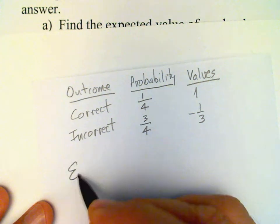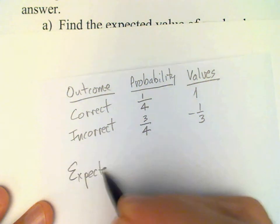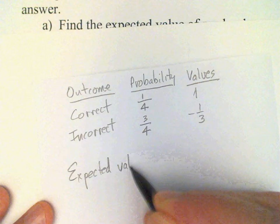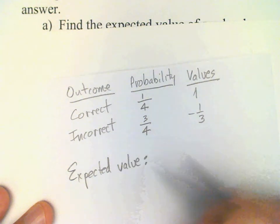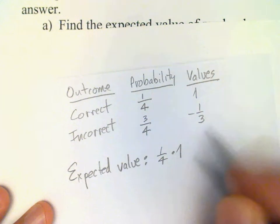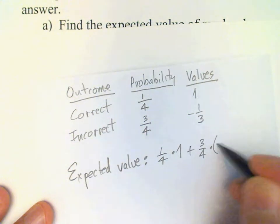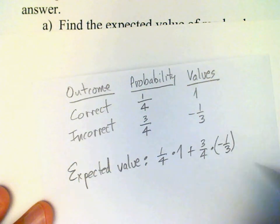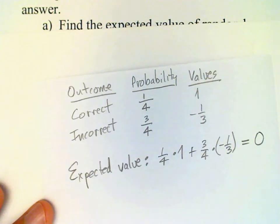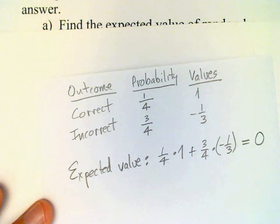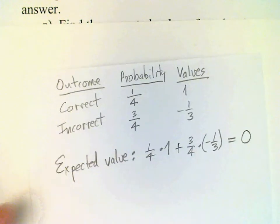Our expected value, if we've eliminated one of the choices, is one-fourth times one plus three-fourths times negative one-third, and that turns out to be zero. One-fourth minus one-fourth gives us zero.